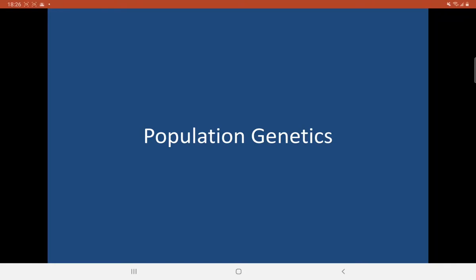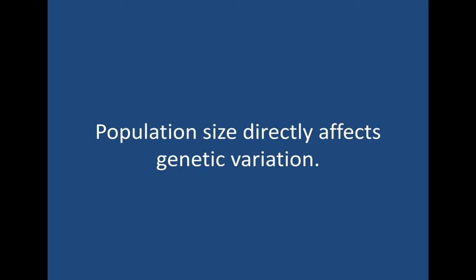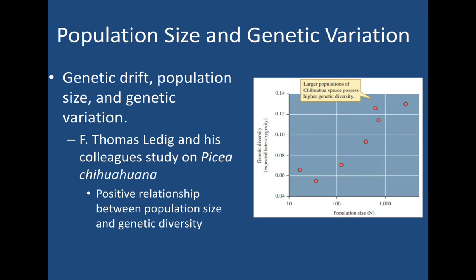Let's move on to the final part of this lecture, which is on population genetics. Population size directly affects genetic variation — we have to take note of how the size of a population affects how varied the genes are. Genetic drift is less common in large populations. Recall that genetic drift is a change in allele frequencies in a population due to chance. Although it can happen to populations of any size, this phenomenon is much more pronounced in smaller populations.